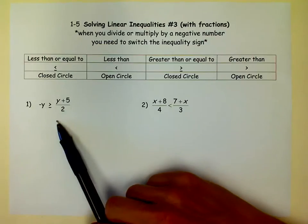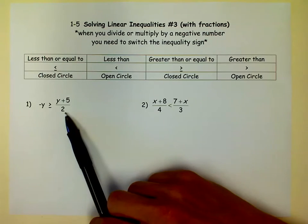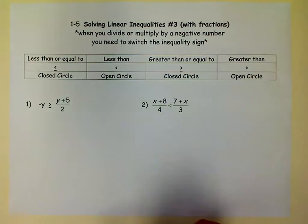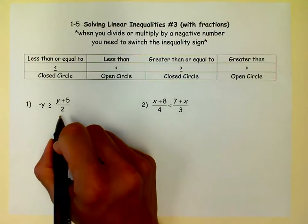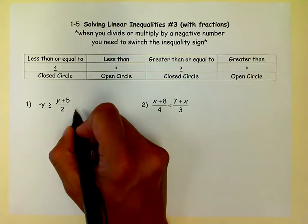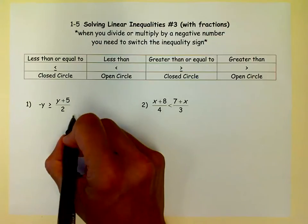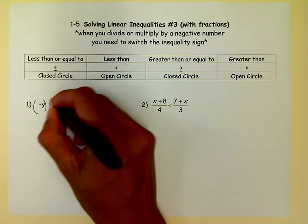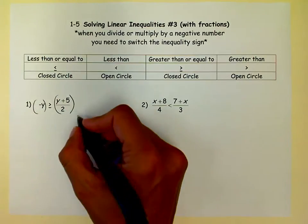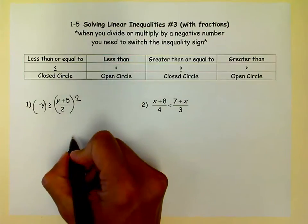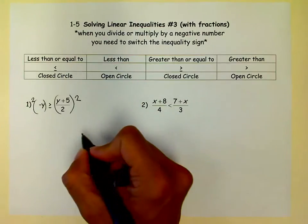So we have an inequality that we need to solve. We need to get Y alone. We need to get rid of our fraction. The best way to get rid of the fractions is to multiply each side by the common denominator. So we only have one denominator, it's two. So we're going to multiply the right side by two and the left side by two.